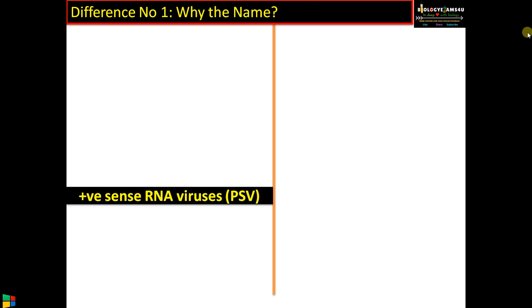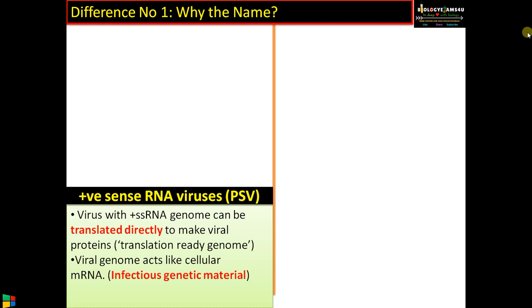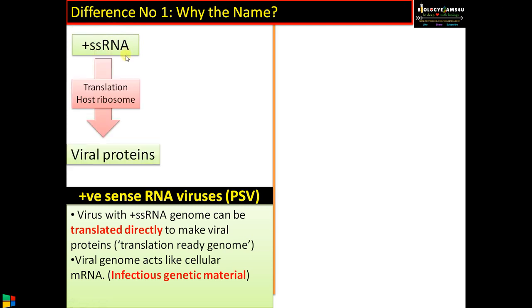Positive sense RNA virus, also called PSV. In a positive sense RNA virus, the single-stranded RNA genome is translated directly to make viral proteins. It has a single-stranded RNA genome. The host ribosome machinery can recognize this RNA and will directly translate it into viral proteins. So the genome is translation-ready — it just acts like an mRNA, or the genome is infectious. Once inside the host, it will be easily translated to viral proteins.